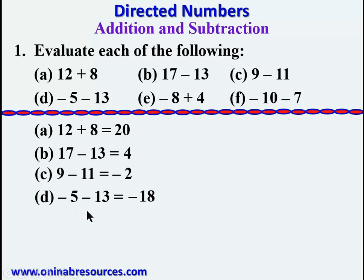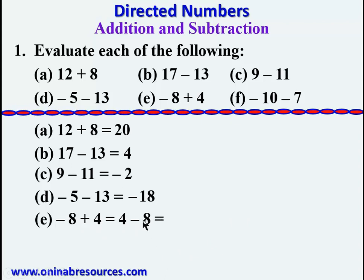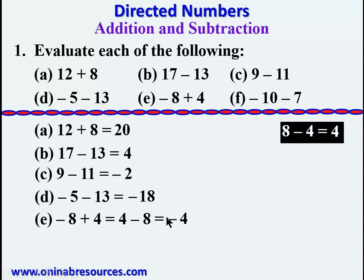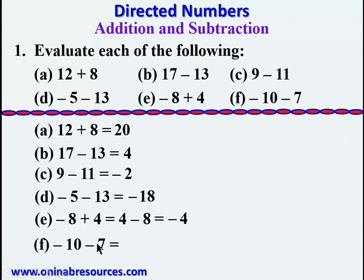For part e: negative 8 plus 4. We can rearrange so the positive number comes first, giving us 4 minus 8. This is another case of subtracting a large number from a small number. We treat it as 8 minus 4, which gives 4. Since 8 minus 4 is positive 4, therefore 4 minus 8 gives negative 4. So negative 8 plus 4 equals negative 4.